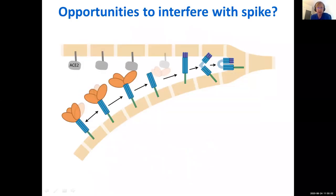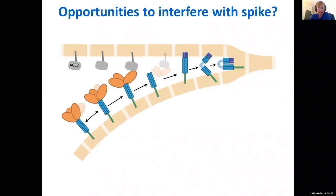What we want to do is really try to understand more about how this spike works and how membrane fusion in general works, and see if there are ways we can interfere with it. If we knew enough about the details, we might be able to develop something smaller than an antibody — something you could just take as a pill. In order to do that, we need to really understand how this process works so we can identify opportunities to interfere with it.